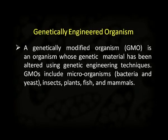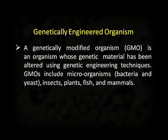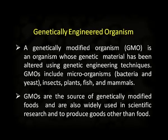Let us discuss genetically engineered organisms. A genetically modified organism (GMO) is an organism whose genetic material has been altered using genetic engineering techniques. GMOs include microorganisms such as bacteria, yeast, insects, plants, fishes, and mammals. GMOs are the source of genetically modified foods and are also widely used in scientific research. They are used to produce the protein insulin, which is important for treating diabetes. GMOs are also used for producing biofuels — ethanol is used as a biofuel — and for producing clotting factors used to treat haemophilia.